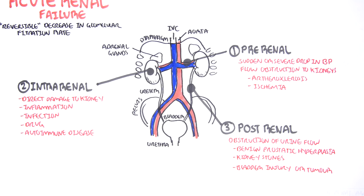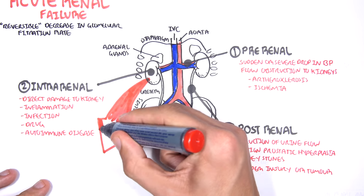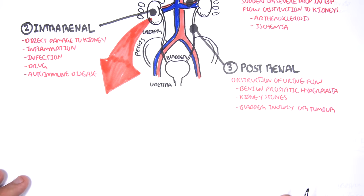Now, we will mainly focus on intra-renal, which is the most common form of acute renal failure. It's the most common cause. Now, before we look into that, we should just quickly brush over the anatomy.